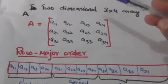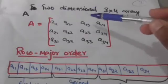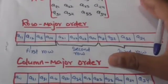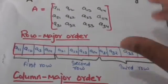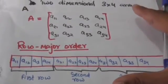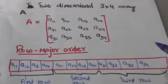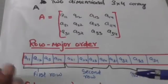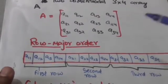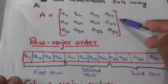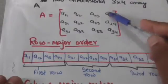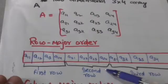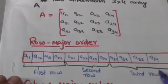Suppose there is a two-dimensional 3×4 array A. In row major order, elements of array A will be stored in memory row by row. The first row of the two-dimensional array A will be stored, then the second row will be stored, and then the third row will be stored.